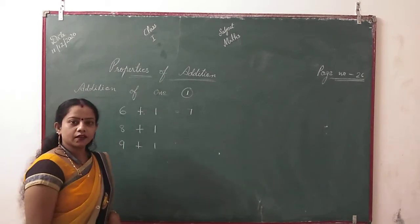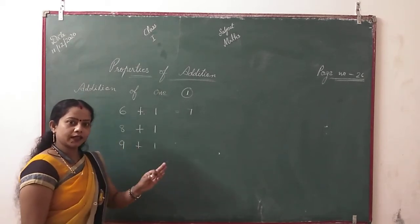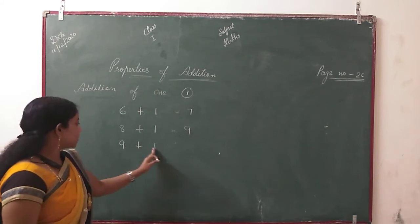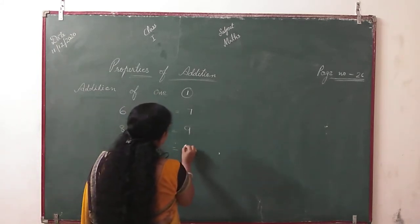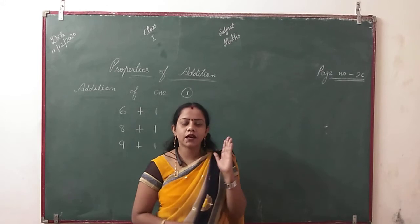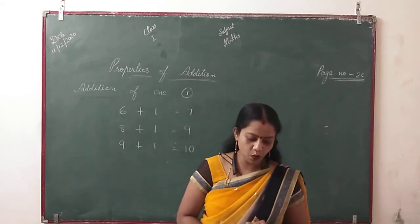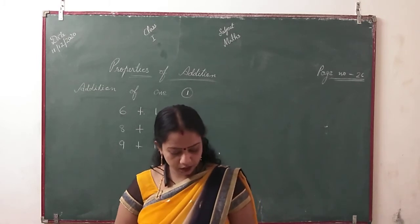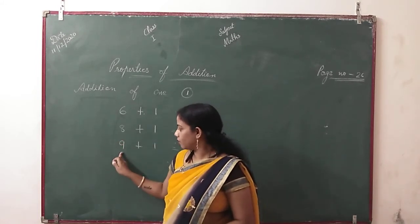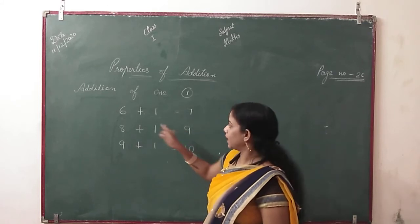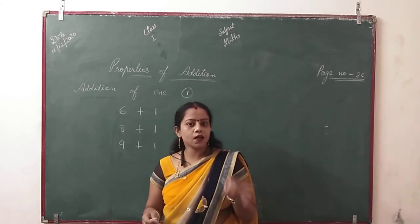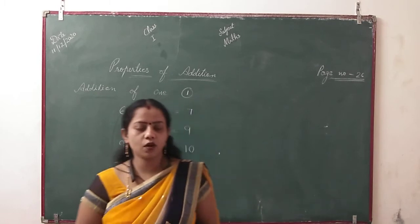If we add 1 to 8, the answer is 9. If any number has 1 added to it, the answer is automatically the next number. When one is added to a number, the answer is the number that comes just after the given number. This is the first property of addition: addition of one.